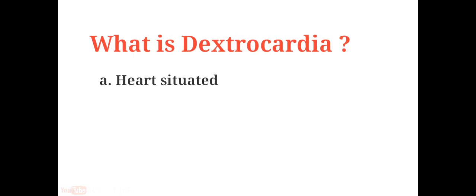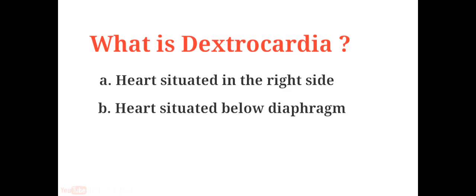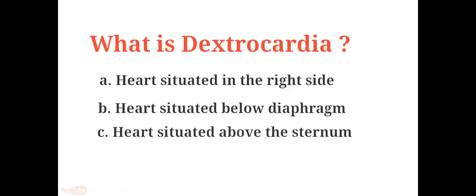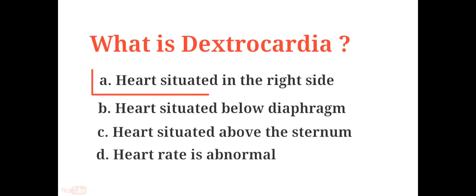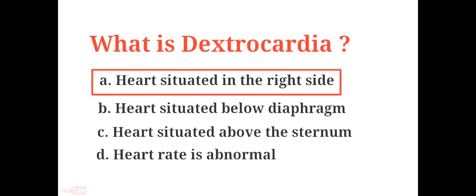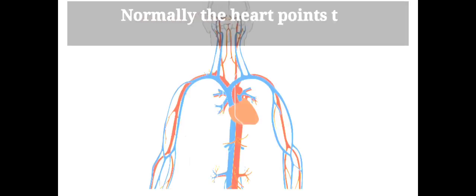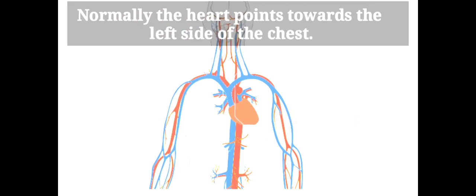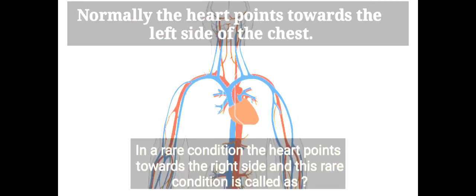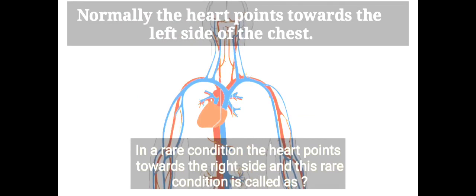What is dextrocardia? A. Heart situated in the right side, B. Heart situated below diaphragm, C. Heart situated above the sternum, D. Heart rate is abnormal. The answer is A. Heart situated in the right side. Normally the heart points towards the left side of the chest, but in this rare condition the heart points towards the right side, which is called dextrocardia.